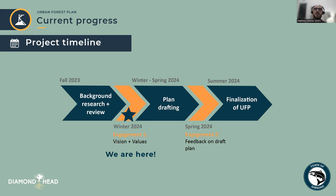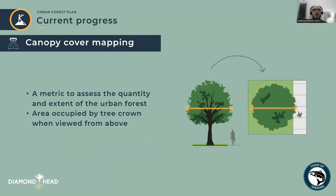It helps if we all understand what I mean by the concept of canopy cover, which is a key way that we measure Gibsons' urban forest. Canopy cover is a metric we use to assess the quantity and extent of the urban forest — it's the area of the ground occupied by tree crowns when you look at them from above, essentially the area of that approximate rough circle shown on the right-hand side of the image on the slide.